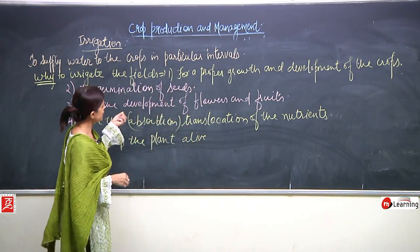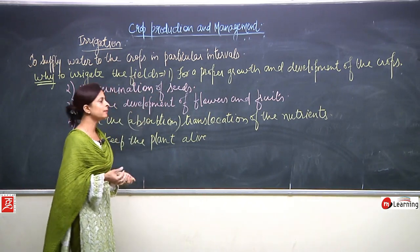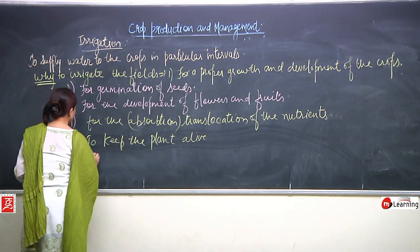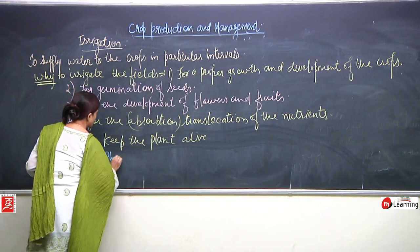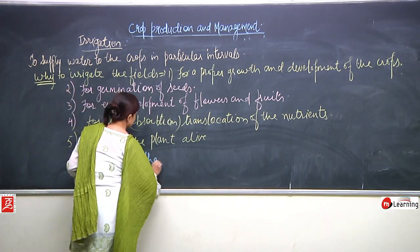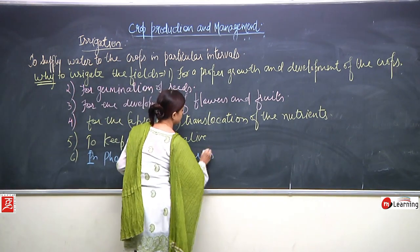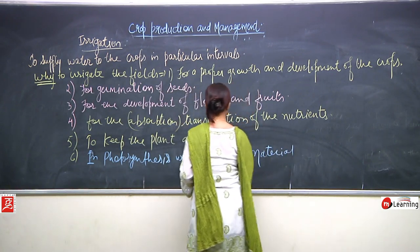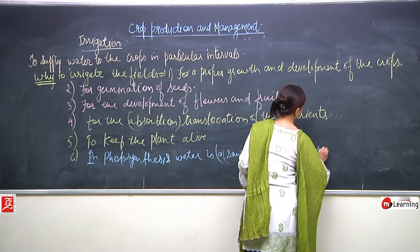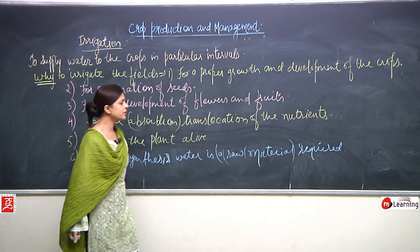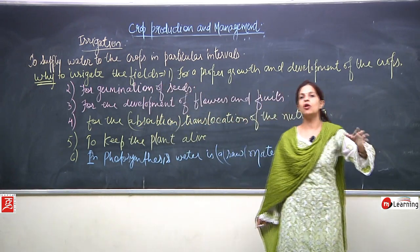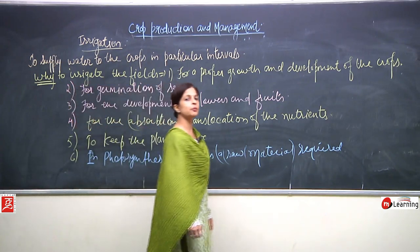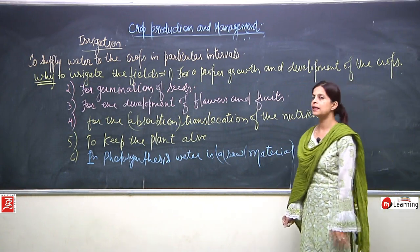In the absence of water, all these mechanisms would not take place, so automatically the plant is going to die. In photosynthesis, water is a raw material and is required. We know that plants absorb nutrients in presence of sunlight with carbon dioxide and chlorophyll, but if water is not there the leaves cannot prepare food - photosynthesis cannot take place in absence of water.